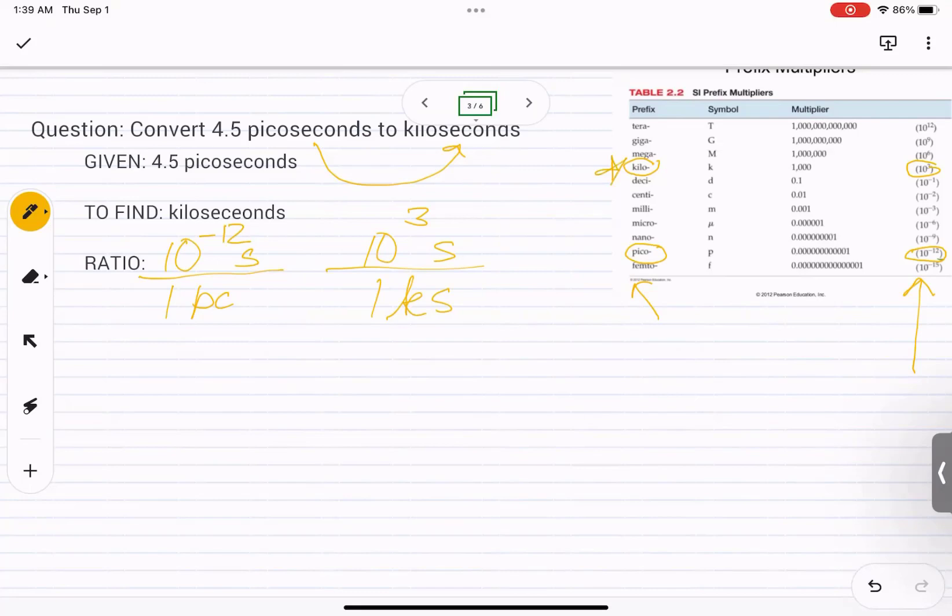So we put the base unit seconds, or you can put meters, or you can put liters, any of those. And if you put it at the end, you can say, for example, 10 raised to nine meters is equal to one gigameter.